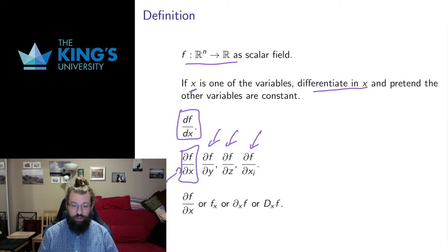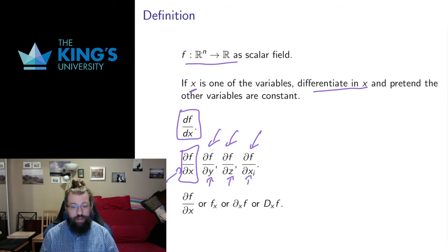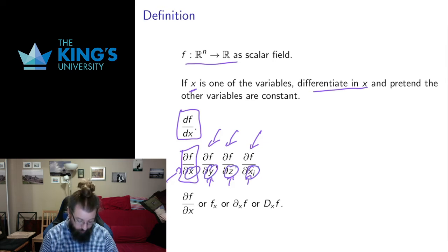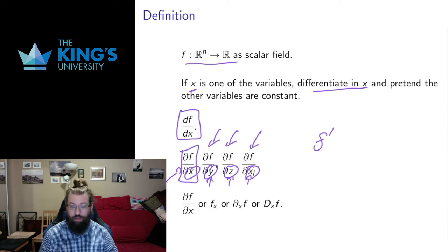In each of these cases, whatever variable is indicated in Leibniz notation, we pretend that's the only variable — everything else, all the other variables, we just pretend they're constants. You can see how Leibniz notation is quite nice here, because we need to specify which variable we're dealing with. Newton's notation of f-prime doesn't tell you what the variable is, so we really need to rely on something like Leibniz notation.